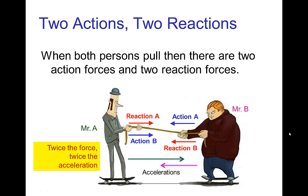Another situation is that if instead of one character pulling, if they both pull, then we have two actions — the pulling of each separate character — and then two corresponding reactions. So we have twice the force and twice the acceleration, assuming each one pulls with the same force. Mr. A is pulling on Mr. B — that's the first action-reaction pair. But then Mr. B is also pulling, so there's a second action-reaction pair. So there are two forces on Mr. A and two forces on Mr. B, so more force, more acceleration.